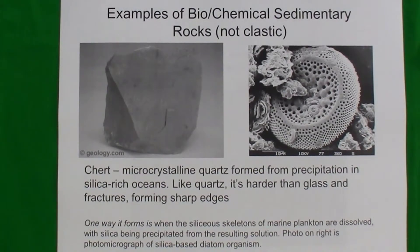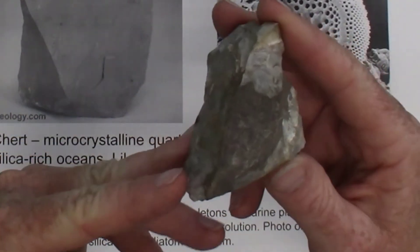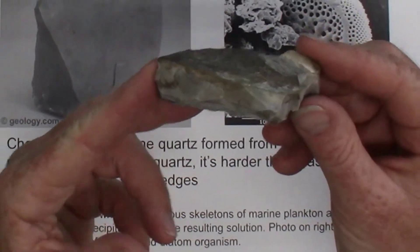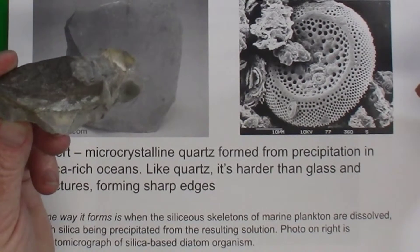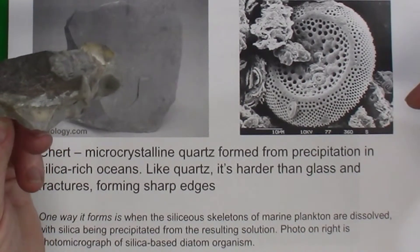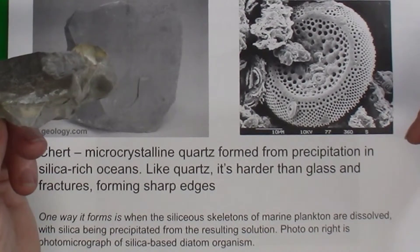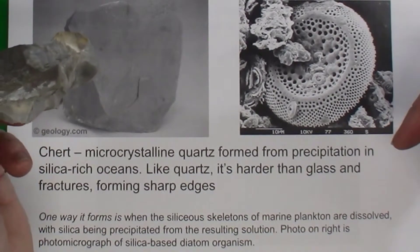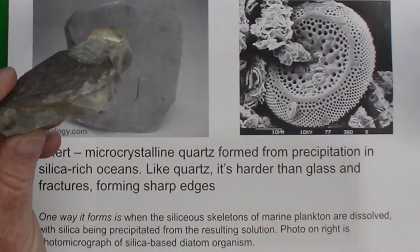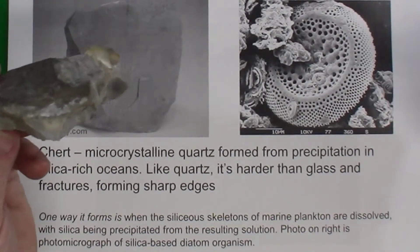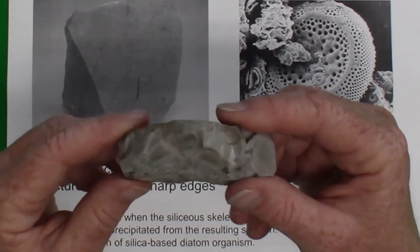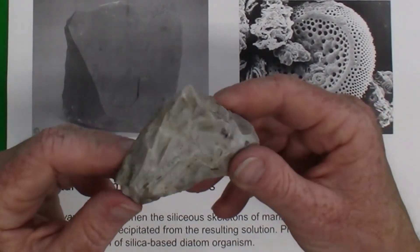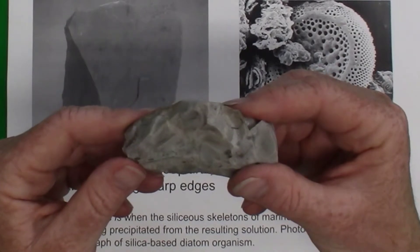Chert is a chemical sedimentary rock that forms in a marine setting when there is a significant amount of silica in ocean water. Organisms make their body parts out of silica, and as they accumulate on the sea floor, this enriches the bottom waters in silica. Quartz — made of silicon and oxygen — then precipitates from the water. Since chert is made predominantly of just one mineral, quartz, mineral property tests can be used to identify it.